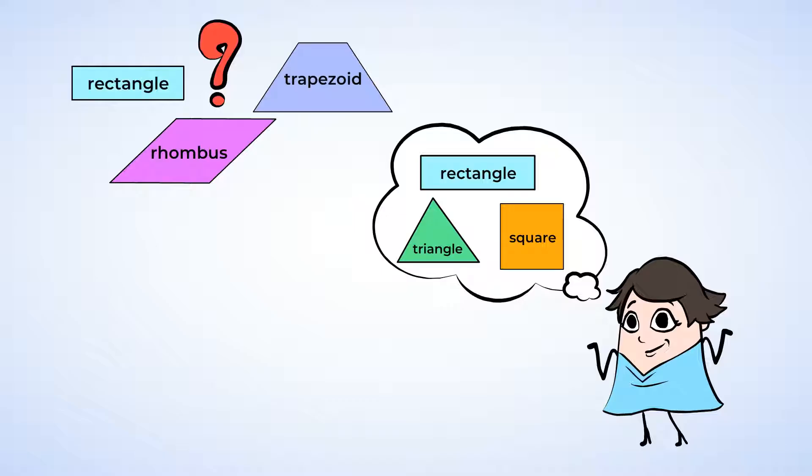But what makes a square different from a rhombus, or a rectangle, or even a trapezoid? Let's dive into the world of quadrilaterals!